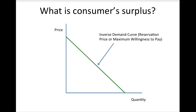The key to understanding consumer surplus is understanding what a reservation price is. A reservation price is the most that a consumer is willing to pay for a particular good or service. We can represent a consumer's reservation prices for different quantities of a product using the inverse demand curve, which is just like a demand curve except that we describe price as a function of quantity rather than quantity as a function of price.